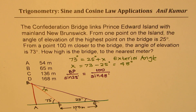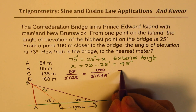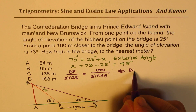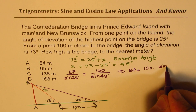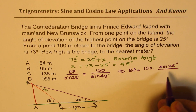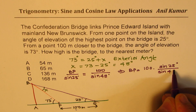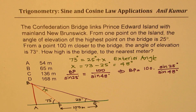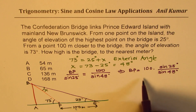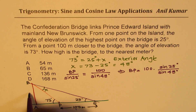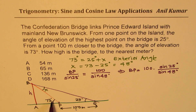My solution is going to be in a very general form, which will give you a general formula to solve such questions — that's the beauty of this. So BP should be equal to 100 times sine of 25 degrees divided by sine of 48 degrees. Now, once we know BP, we can find the height AB using the trigonometric ratio.